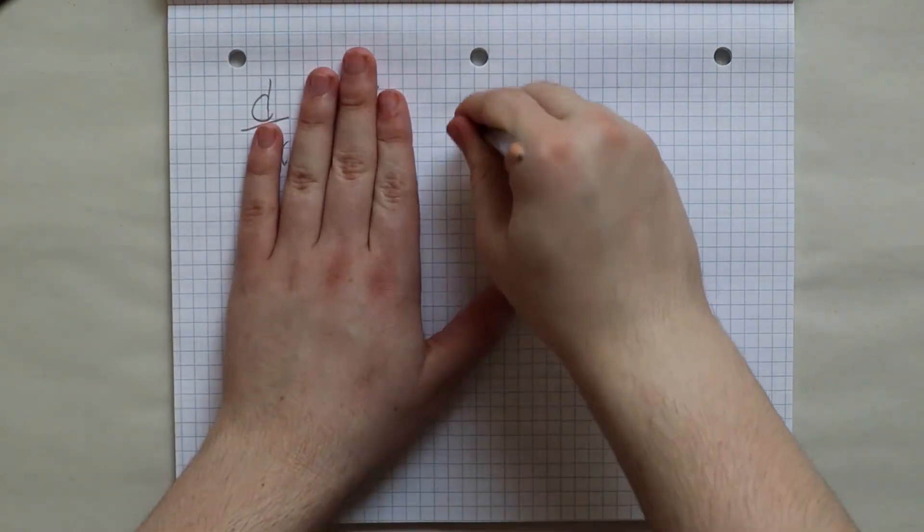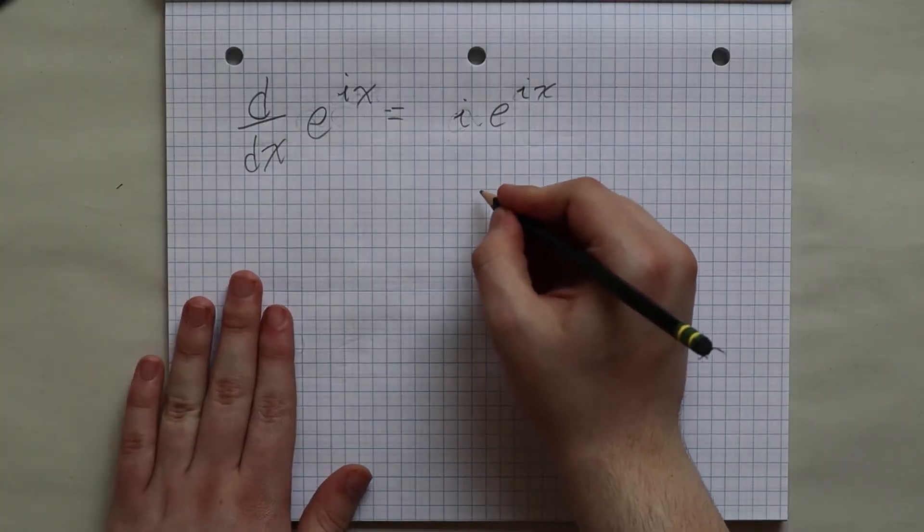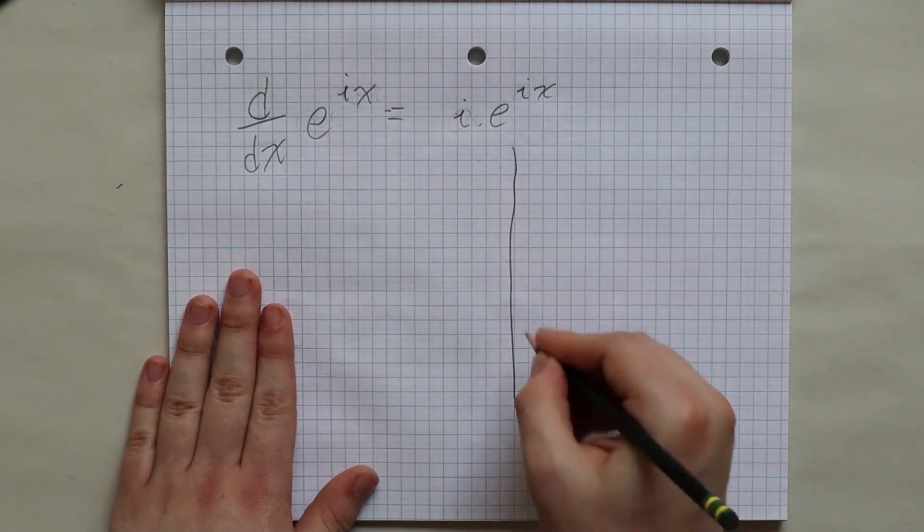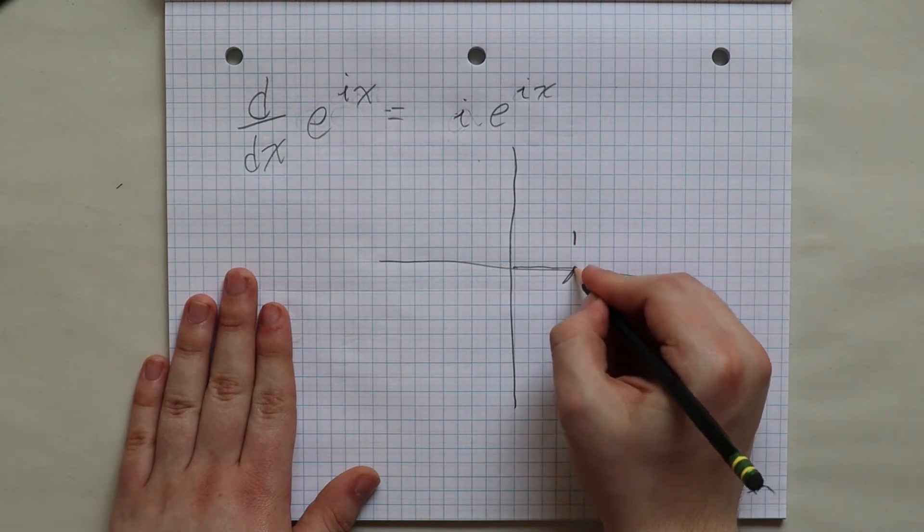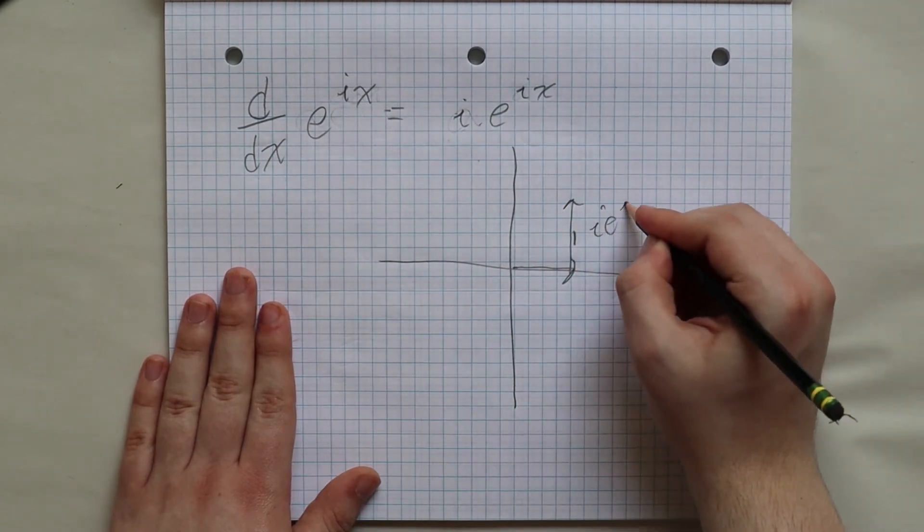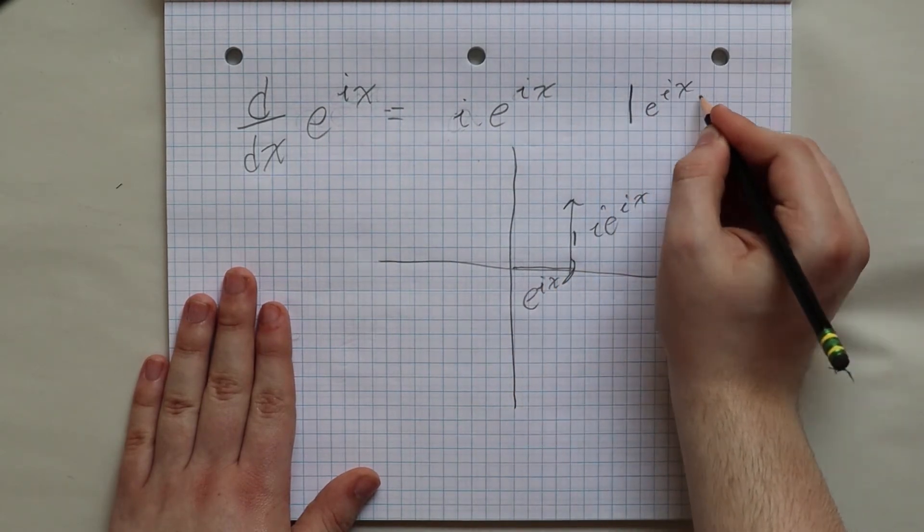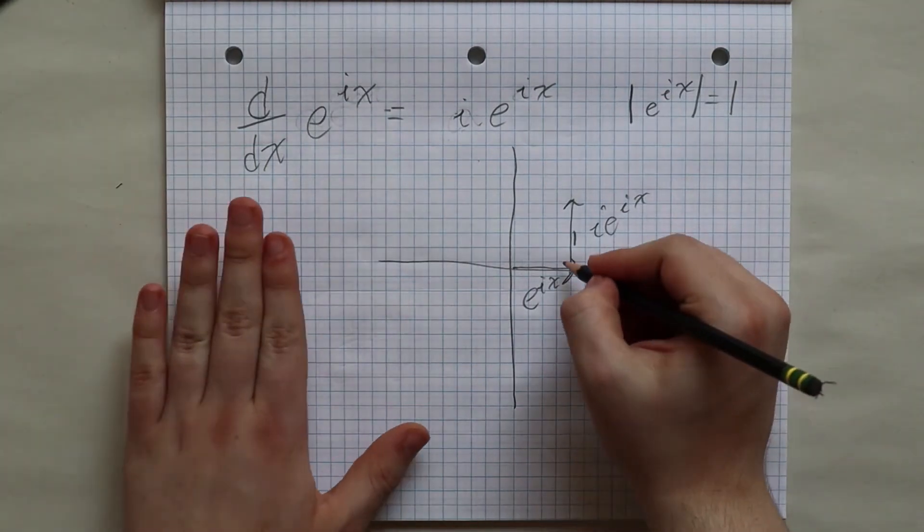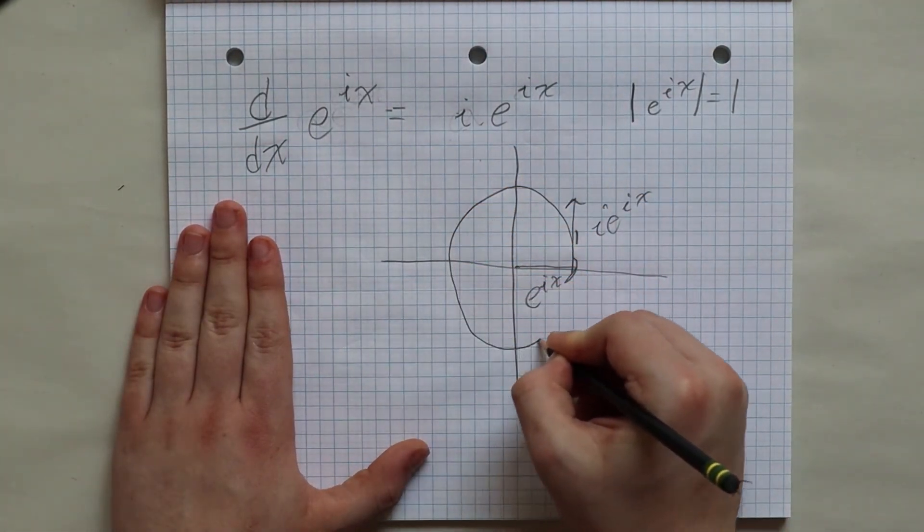The derivative of e to the power of i x is i times e to the power of i x. And so the velocity vector should be rotated 90 degrees counterclockwise, since anything multiplied by i is rotated 90 degrees counterclockwise. And since this velocity vector is always pointing perpendicular to the displacement vector, then the magnitude of this displacement vector will stay a constant, 1. And anyone who's been in geometry class should recognize that this shape will trace out a circle.